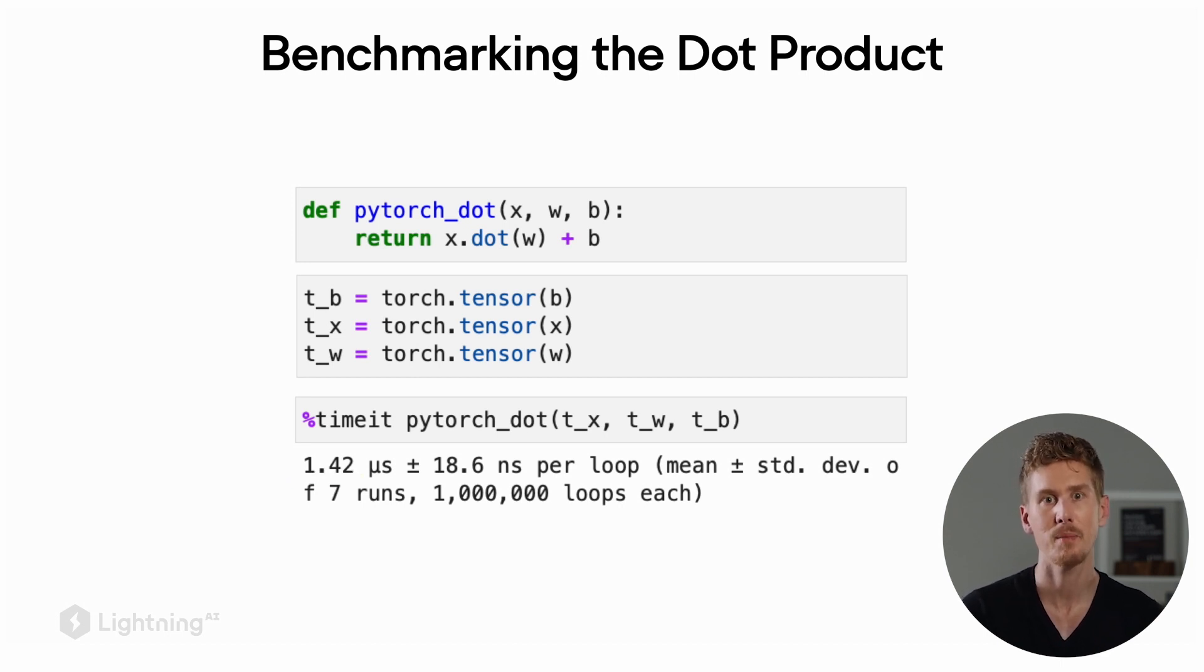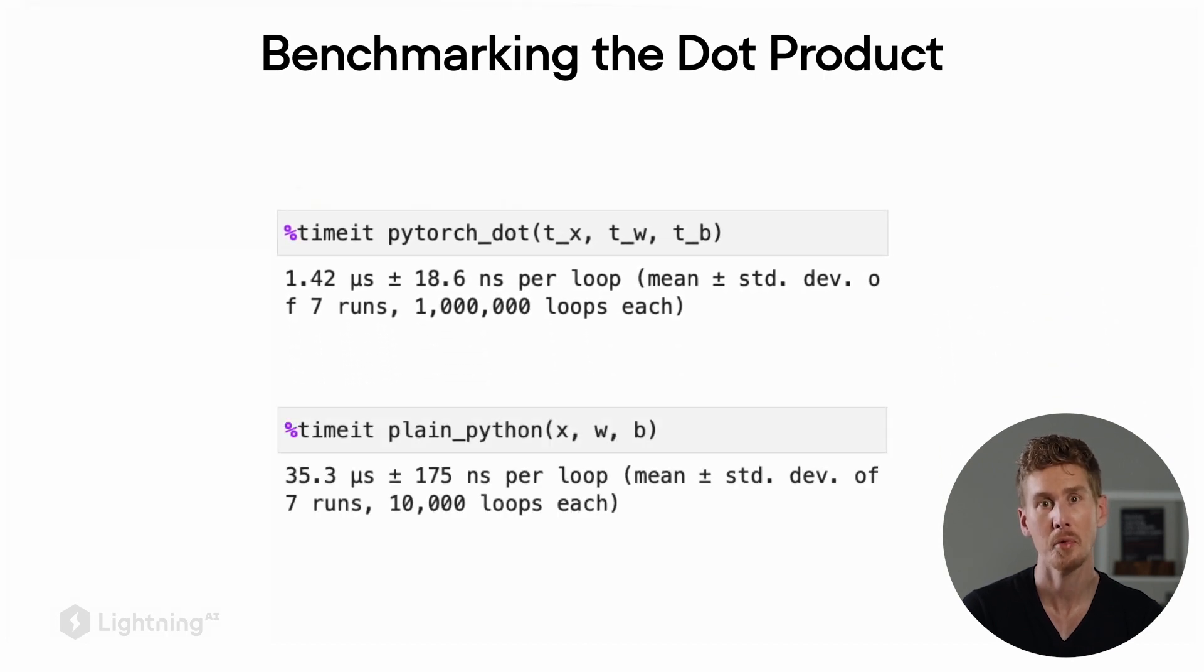As we can see, if we compare the runtime in plain Python to the runtime of the dot product in PyTorch, there's a 25 times speed up, which is huge. So that's actually a good reason to replace Python for loops with dot products wherever we can.